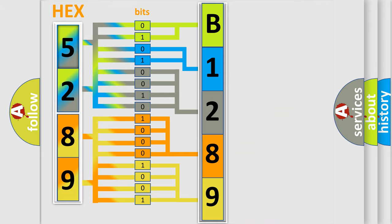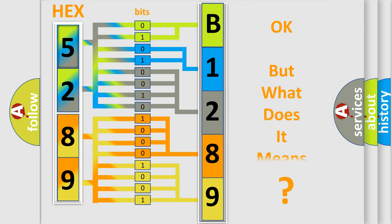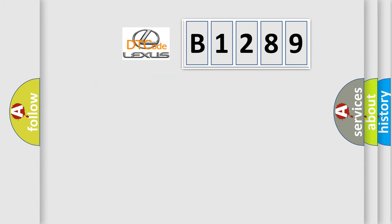We now know in what way the diagnostic tool translates the received information into a more comprehensible format. The number itself does not make sense to us if we cannot assign information about what it actually expresses. So, what does the diagnostic trouble code B1289 interpret specifically for Lexus car manufacturers?